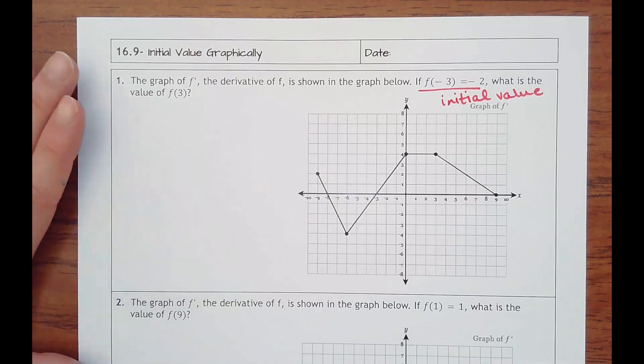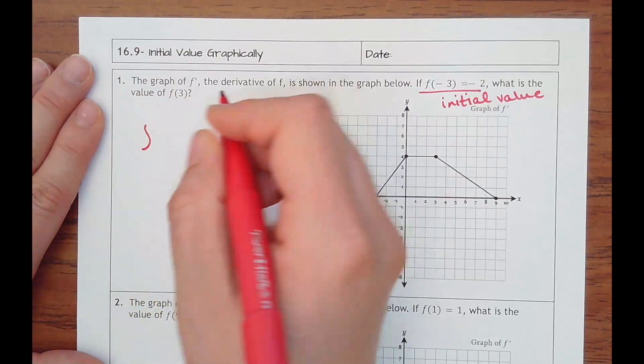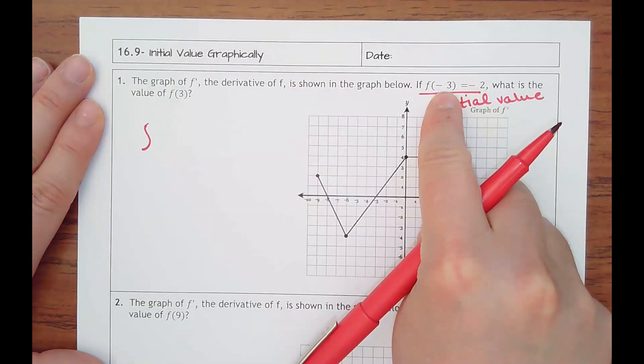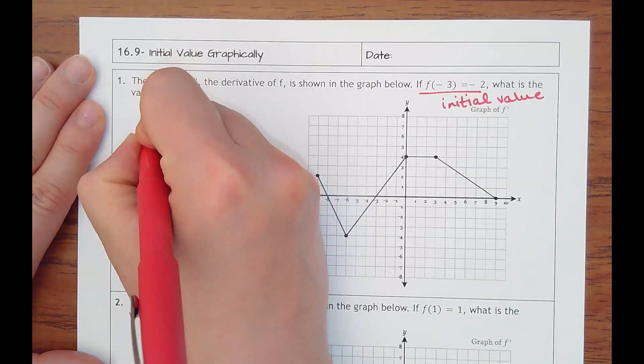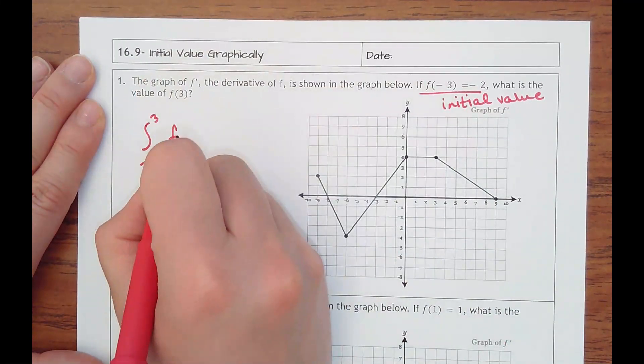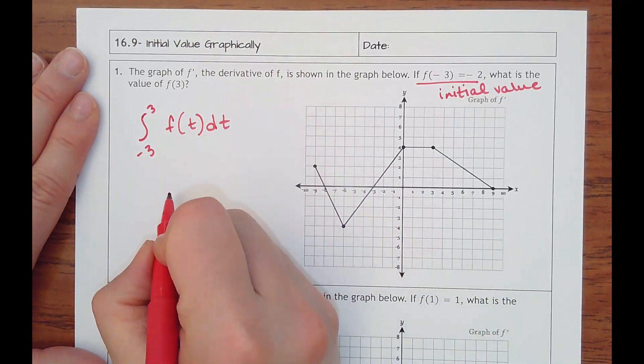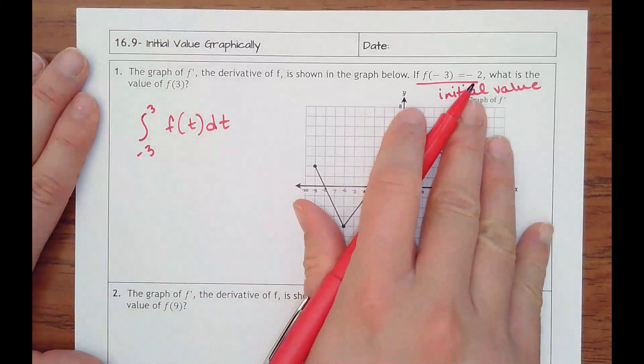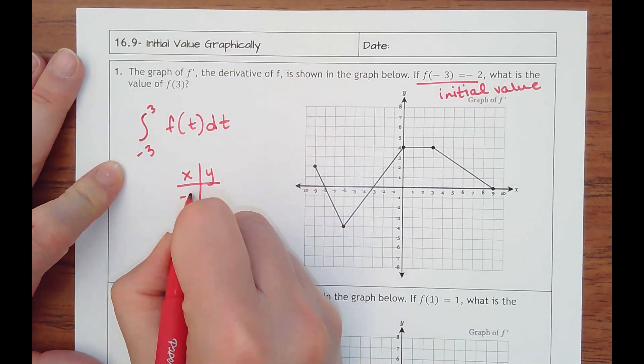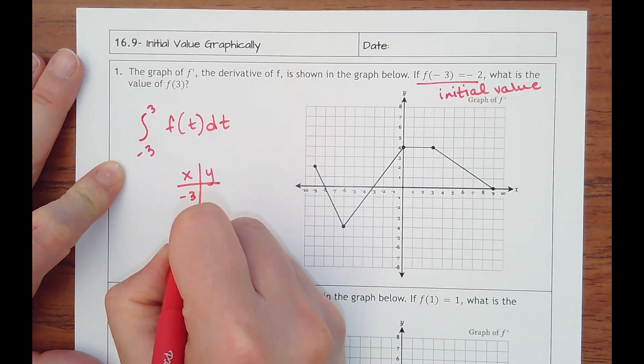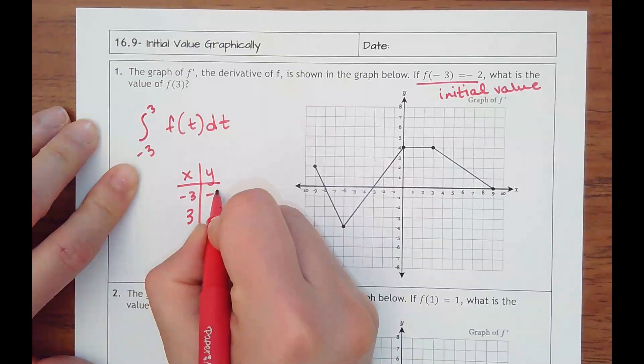So we want to figure out what was f of 3. It's like we're taking the anti-derivative from negative 3 to 3, and I'm just going to put the integral f of t dt. But again, I need to know that I had an initial value, so it might help to make a table. Let's just put negative 3 to 3. When it was negative 3, we're starting at a y value of negative 2.